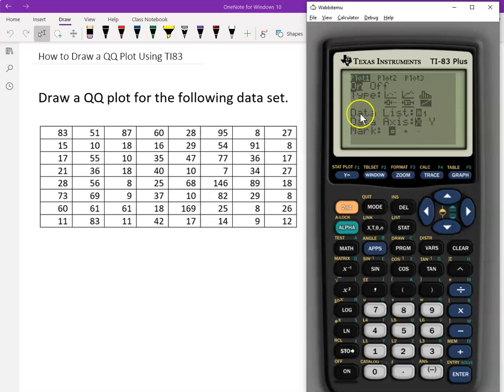And then here is data list. Our data is L1. So that's good. Otherwise, you have to type second one to choose the data column L1. And data axis.